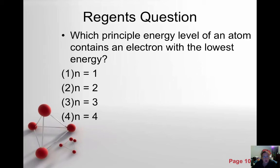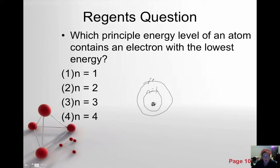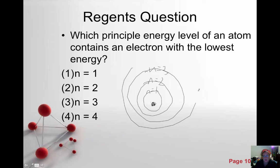Here are some Regents questions to help us practice. Which principal energy level of an atom contains an electron with the lowest energy? In our planetary model, energy level one is called n equals 1, then n equals 2, n equals 3, n equals 4. They get numbered from the center out. The closer it is to the nucleus, the lower the energy; as you get further out, it has higher energy levels. So n equals 1 would be the lowest energy.